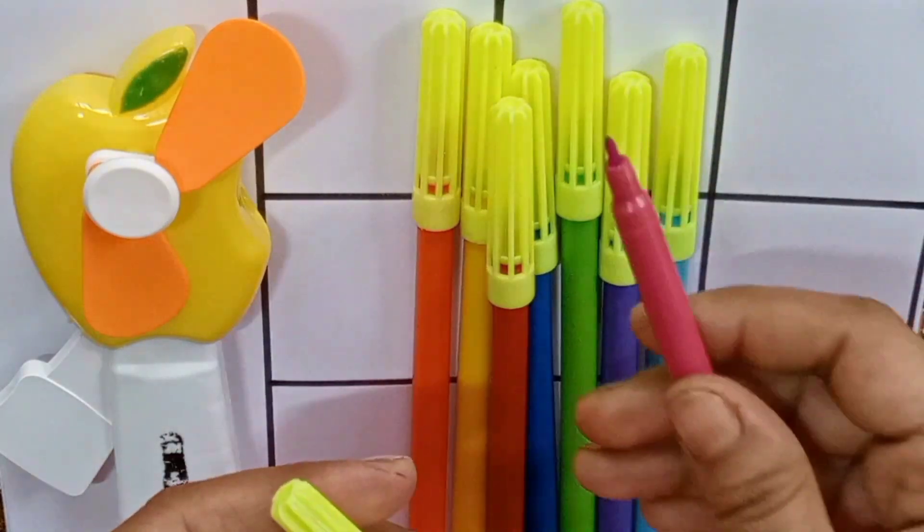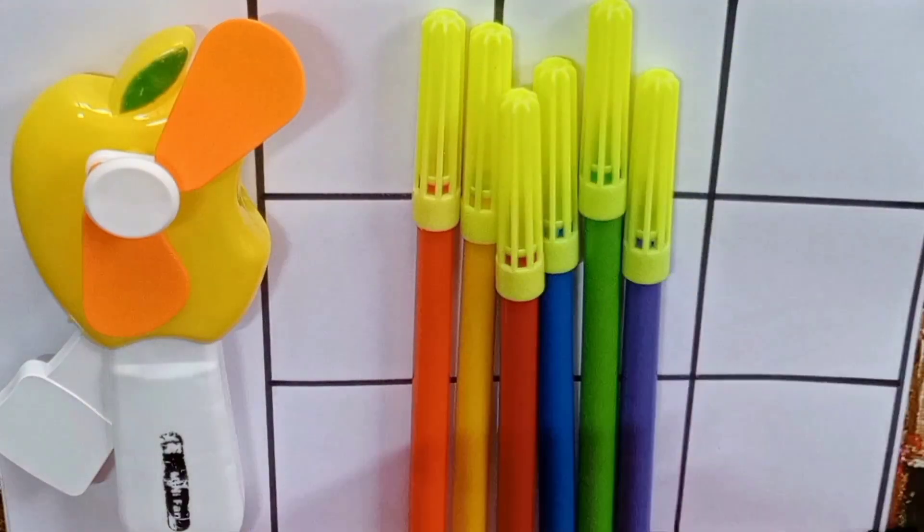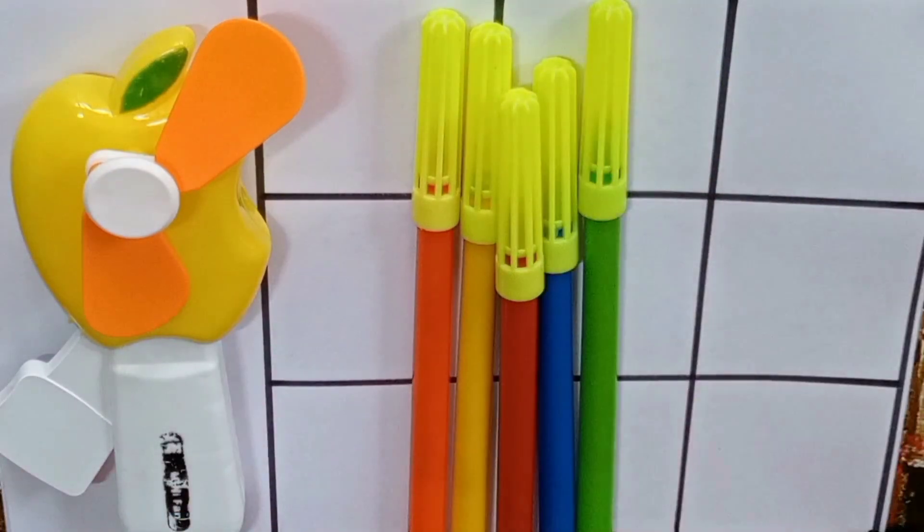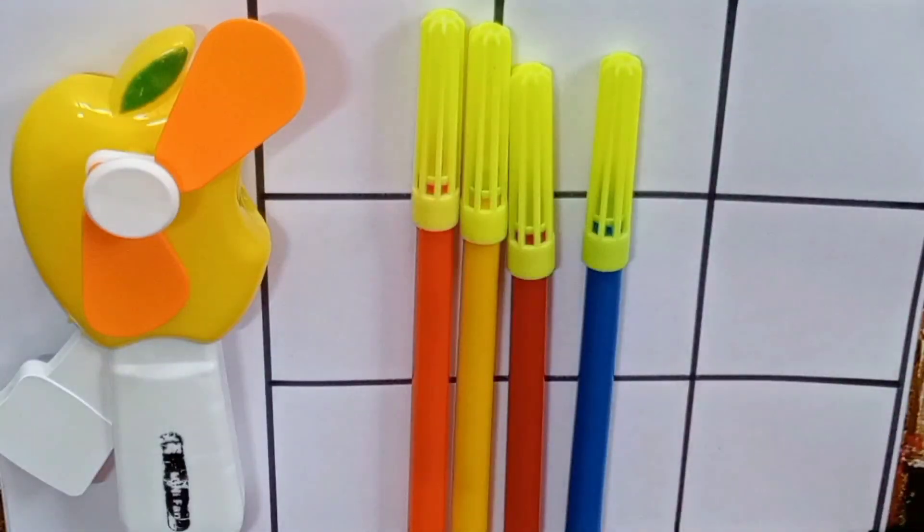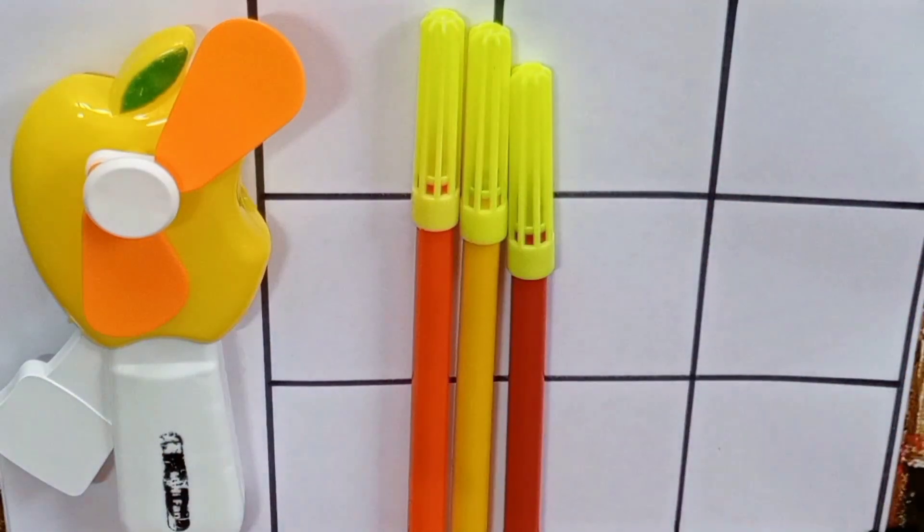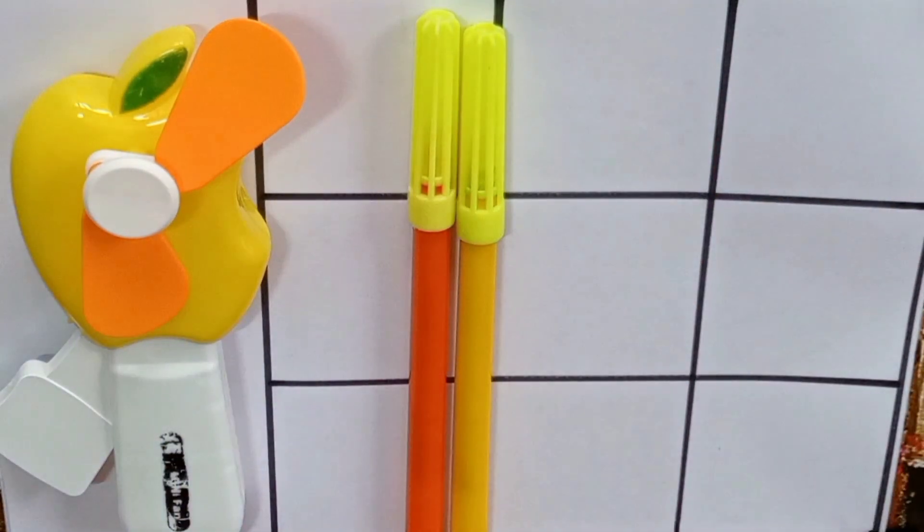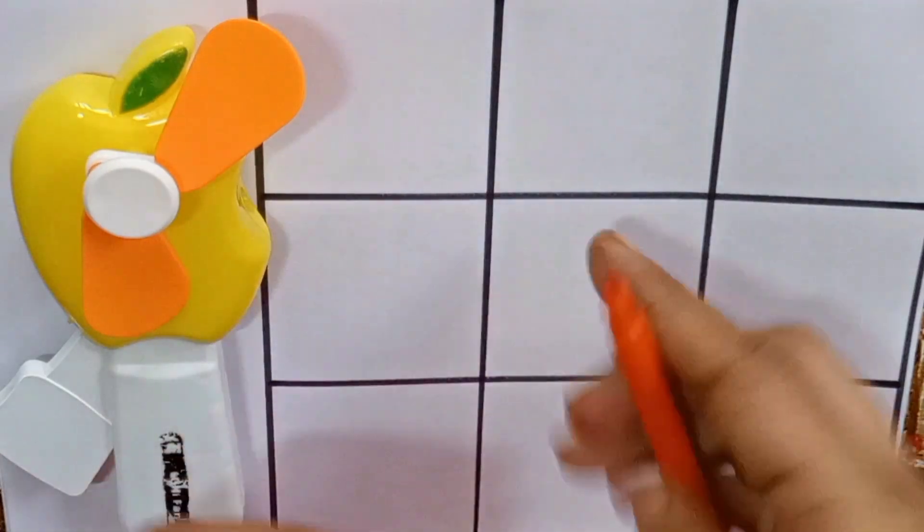Second color is pink, third color is sky blue, fourth color is purple, fifth color is light green, sixth color is blue, seventh color is red, eighth color is yellow, and our last color, ninth color is orange.